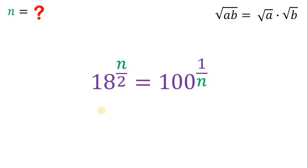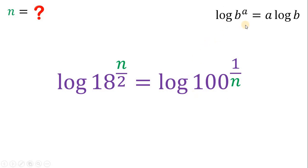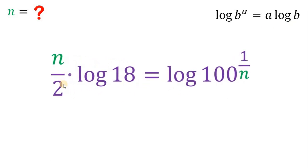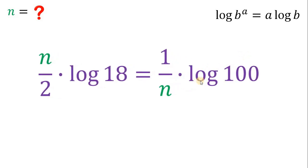At this point, to solve for the value of n, we will use logarithm — let's take the logarithm on both sides in base 10. The reason is we see 100, and 100 is 10 squared, so we choose base 10. Using the law of logarithm, logarithm of b raised to the power of a can be written as a times logarithm of b. Therefore, logarithm of 18 raised to n over 2 becomes n over 2 times logarithm of 18. And logarithm of 100 raised to 1 over n is 1 over n multiplied by logarithm of 100. Since 100 is 10 squared, logarithm of 100 is just 2.